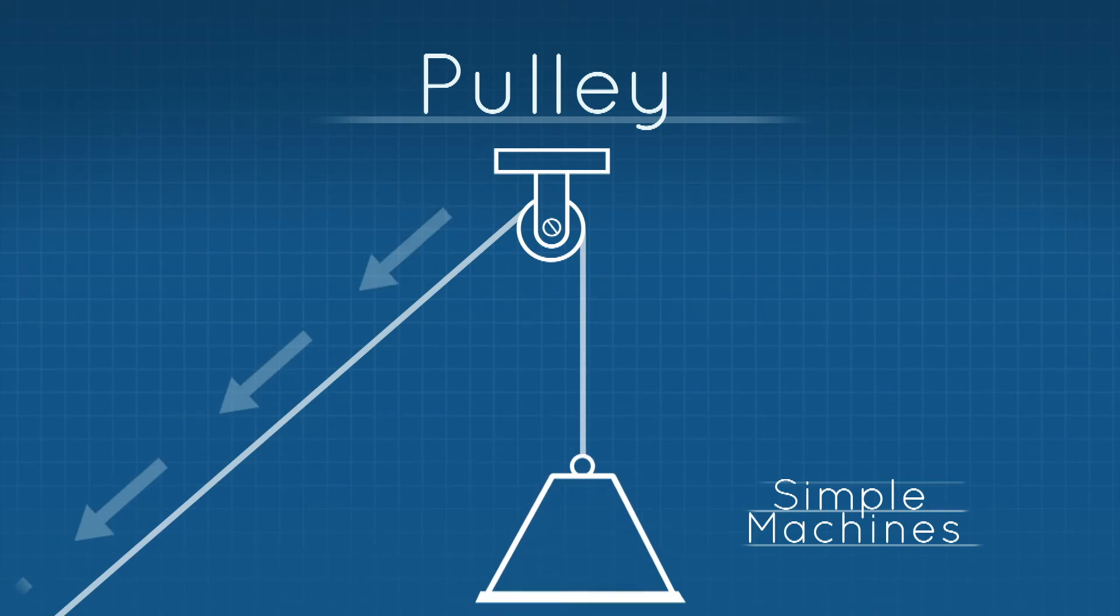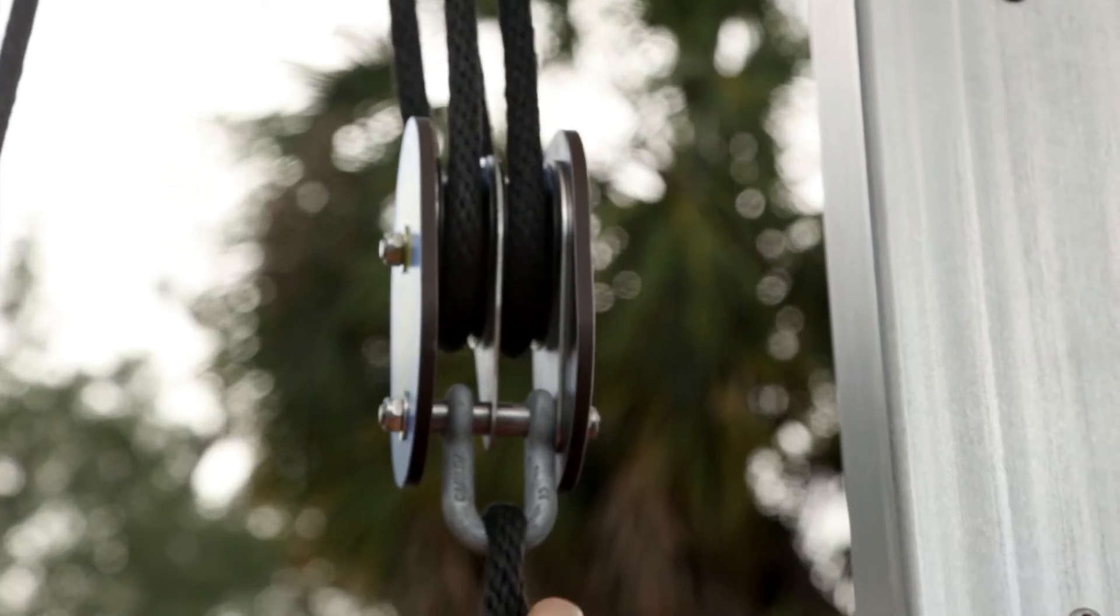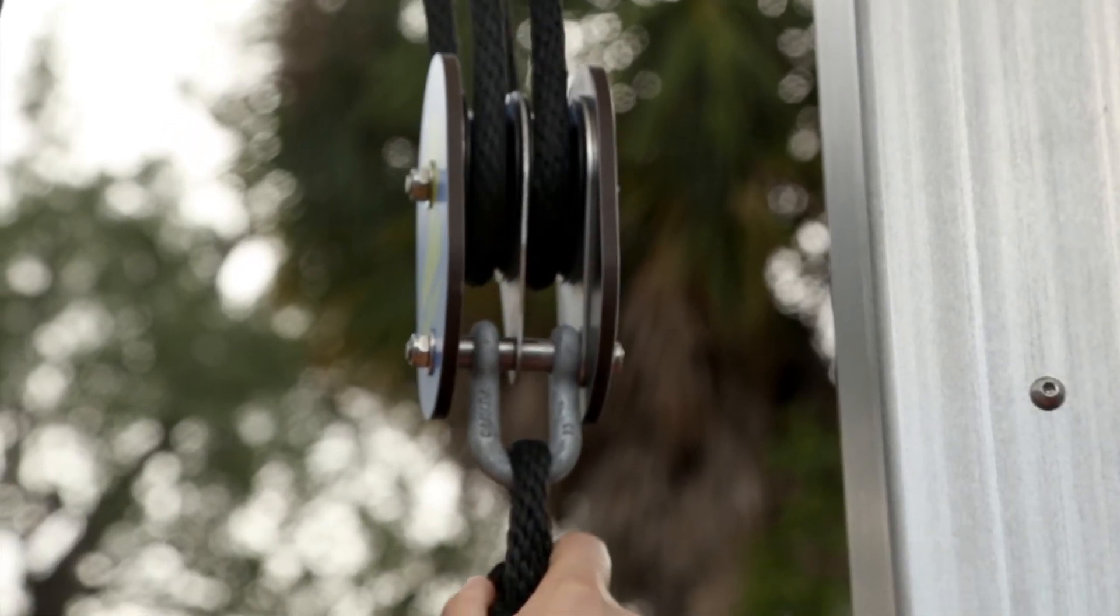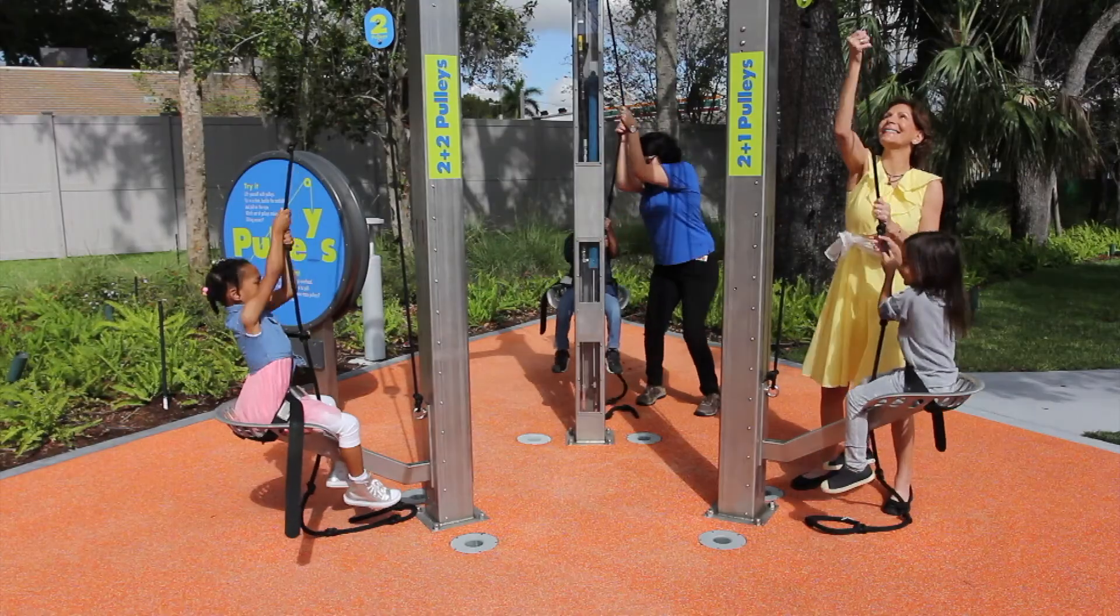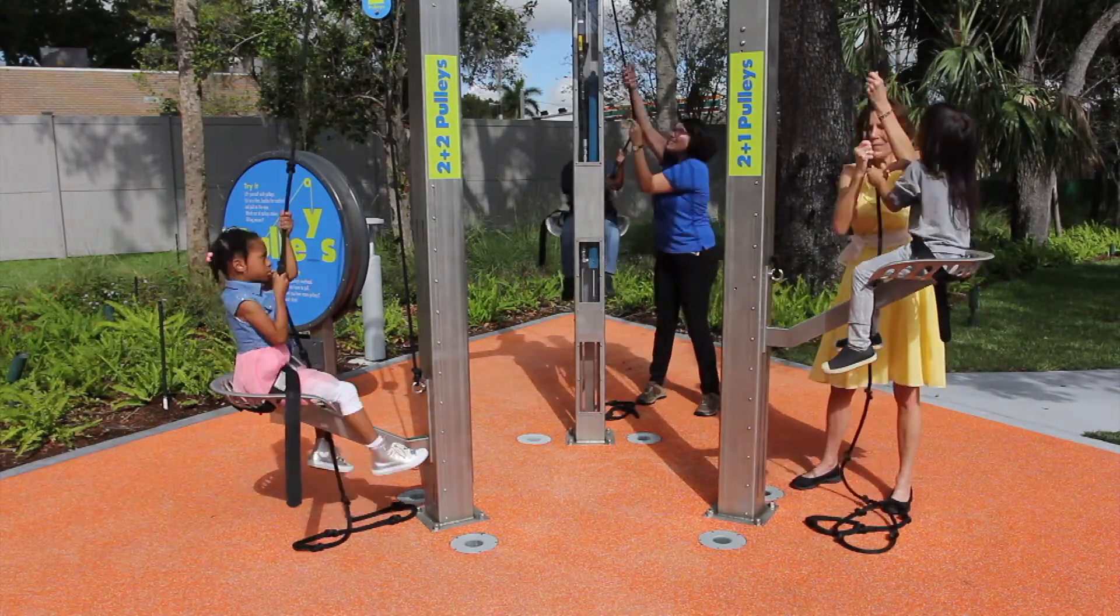Pulley. A pulley is a simple machine. It's a wheel with a groove around its outside and a rope in the groove. A person pulls the rope to make it work.